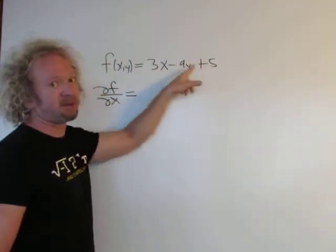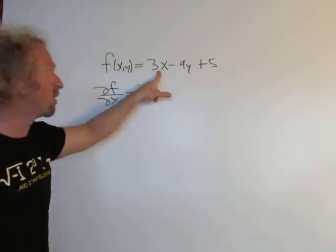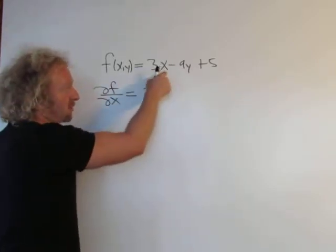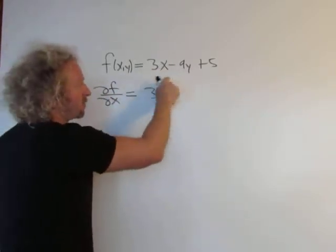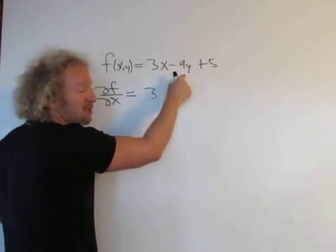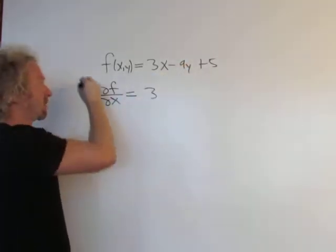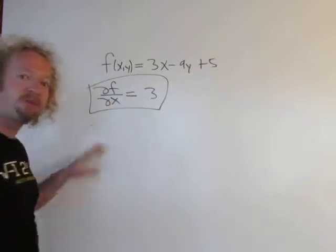So these derivatives are going to be 0. The derivative of 3x, well that's just going to be 3 because the derivative of x is 1. And then these derivatives here are 0, so you get minus 0 plus 0, so I won't write it. So that's the partial derivative of f with respect to x.